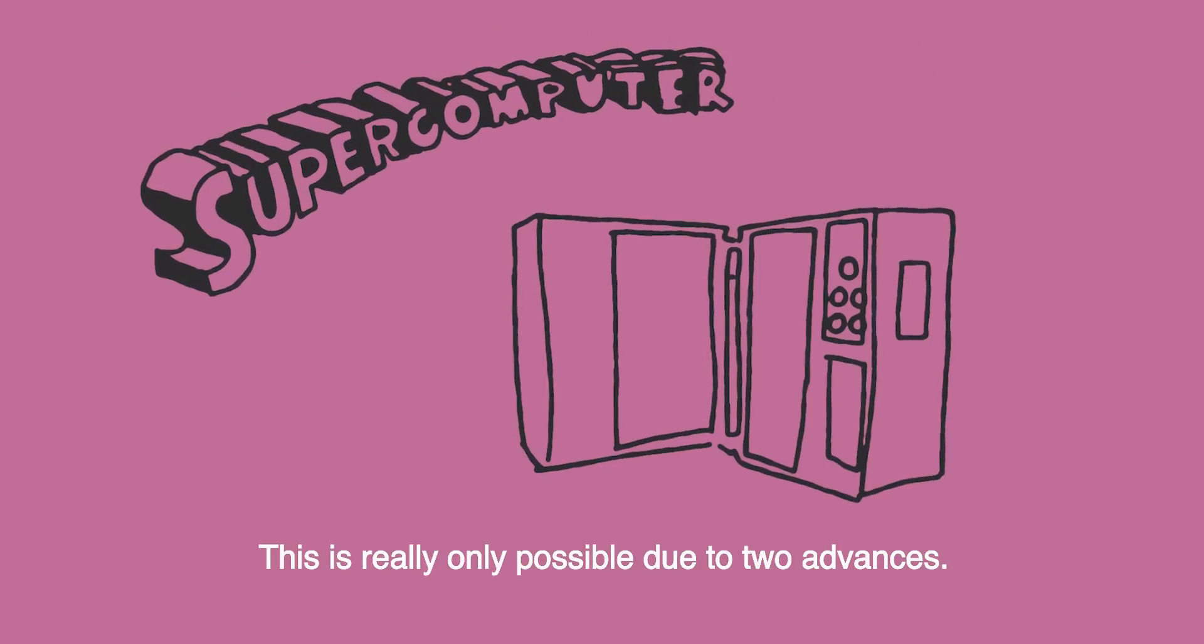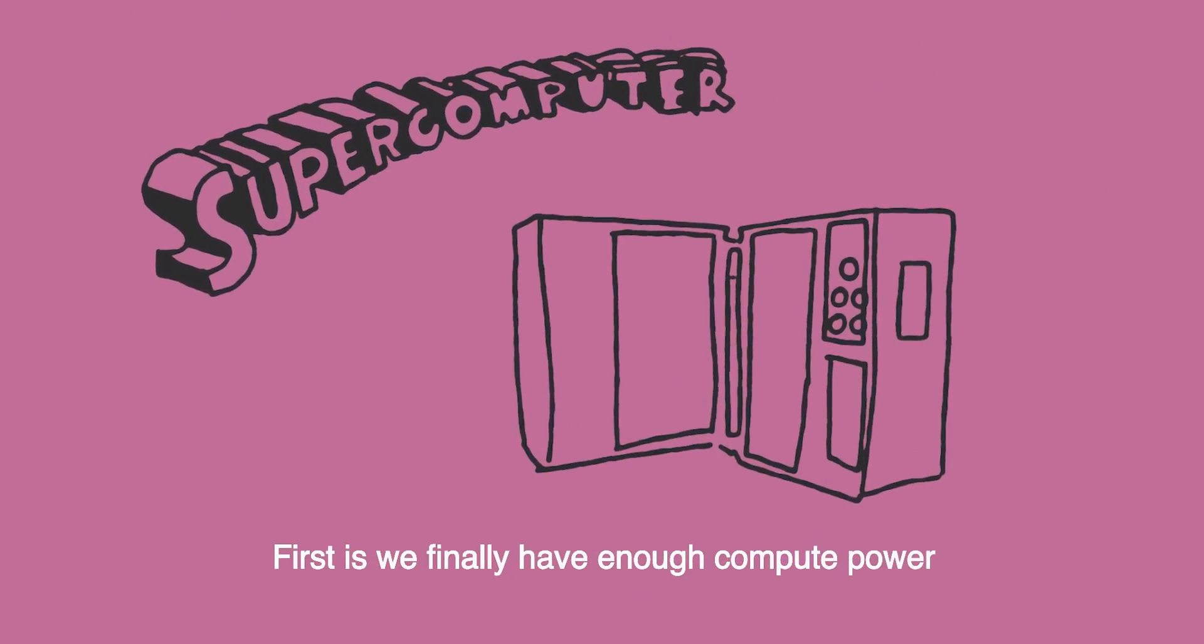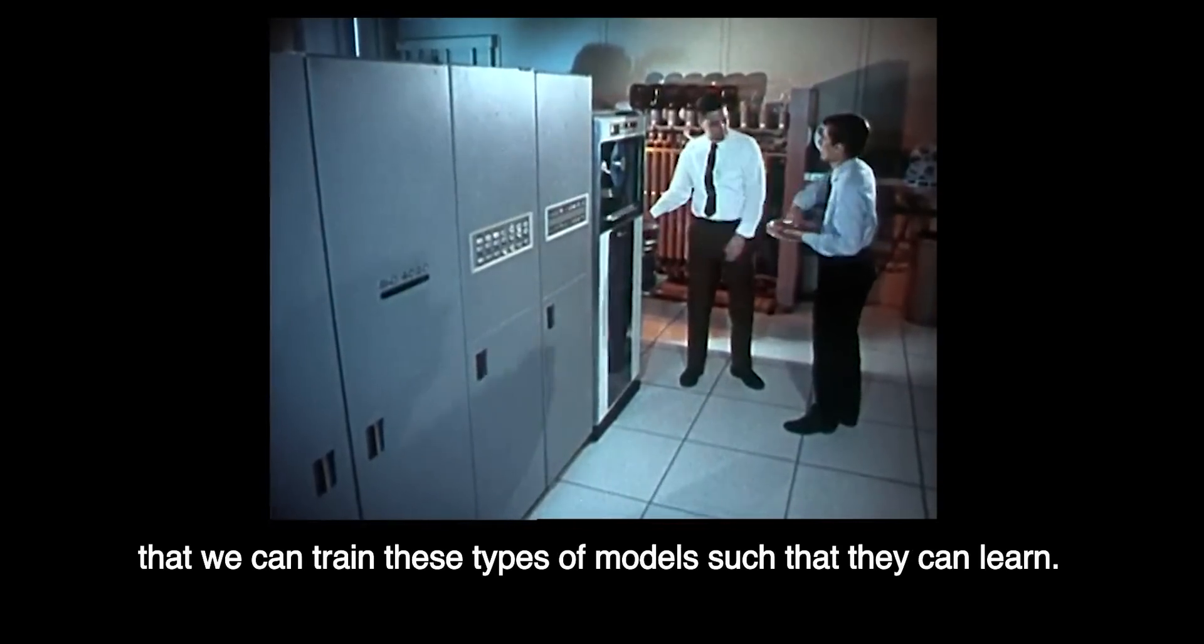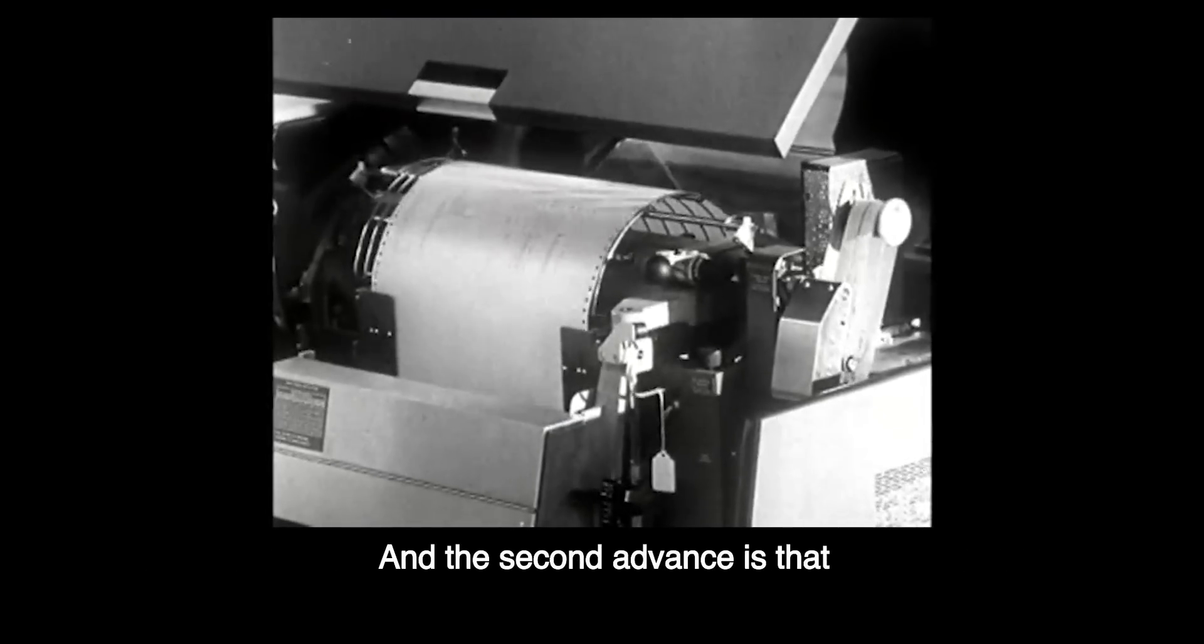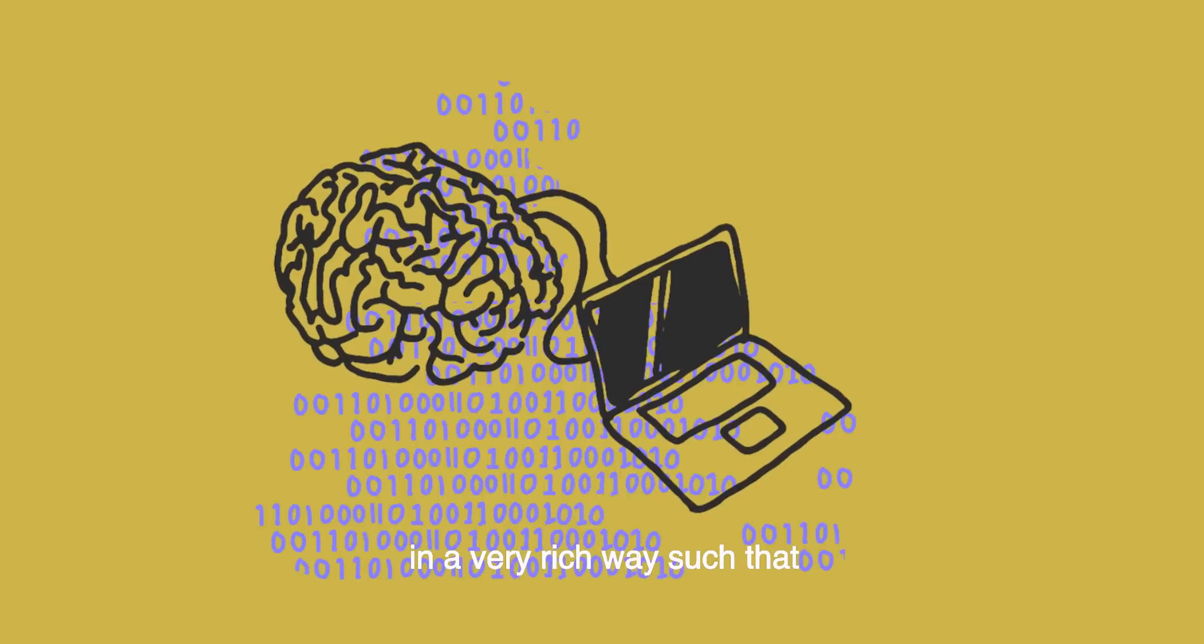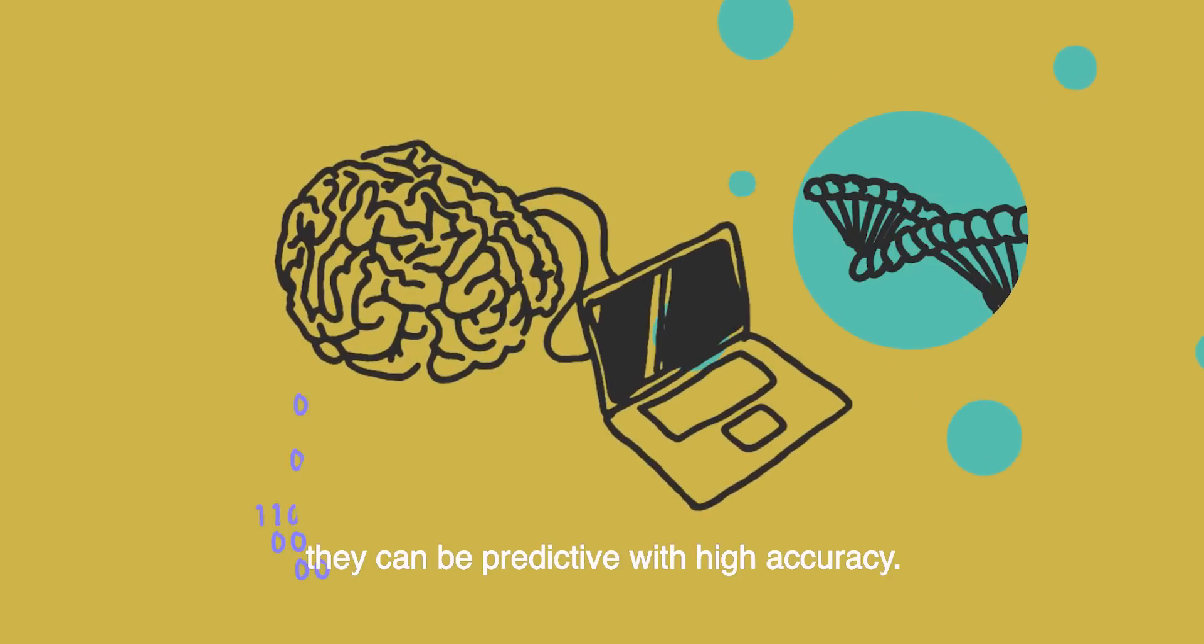This is really only possible due to two advances. First is we finally have enough compute power that we can train these types of models such that they can learn. And the second advance is that we finally have enough data such that we can train these models in a very rich way such that they can be predicted with high accuracy.